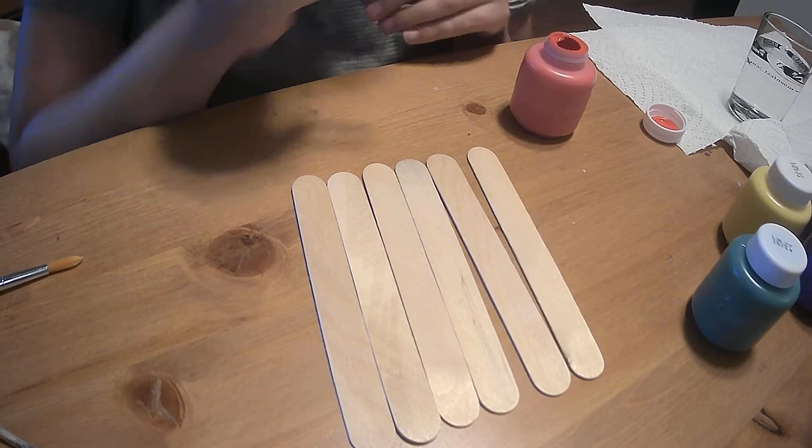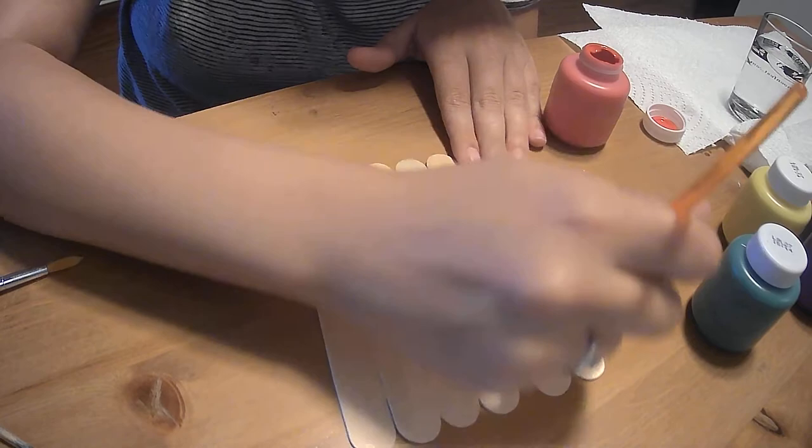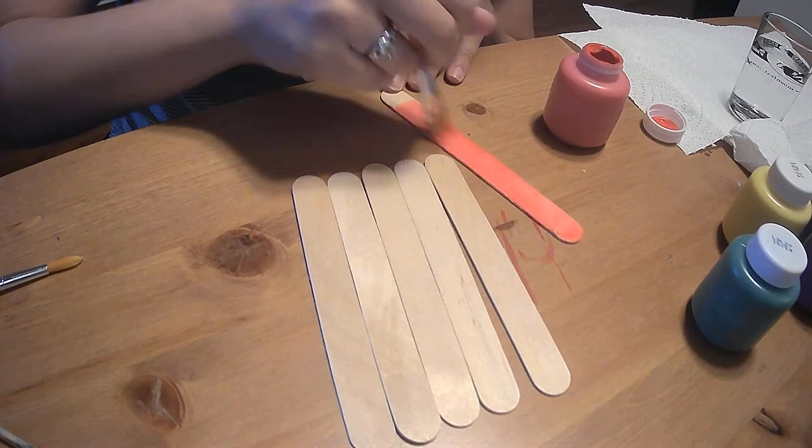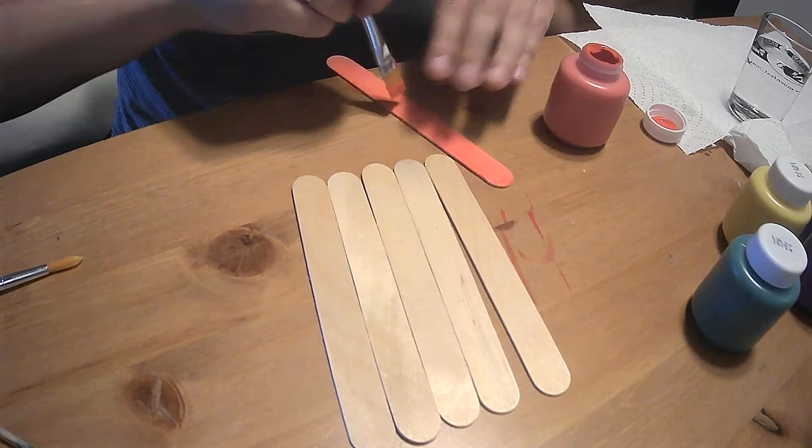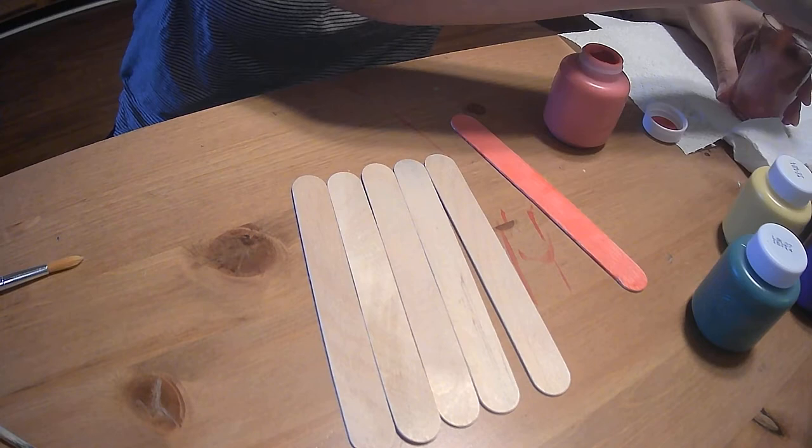We're going to start with our first color of the rainbow and that is red. So we're going to just carefully paint. As you can see, I'm getting some paint on my table but that's okay. I've gotten a lot of paint on this table before. We're going to paint this a nice red and rinse our brush.